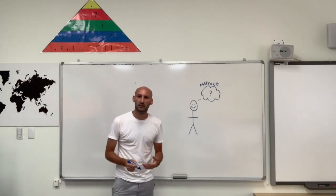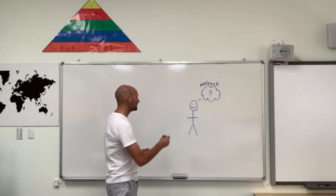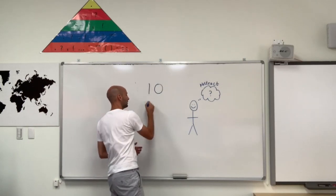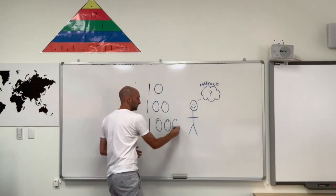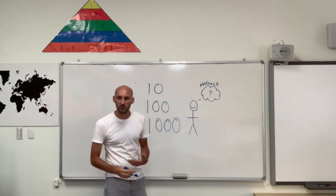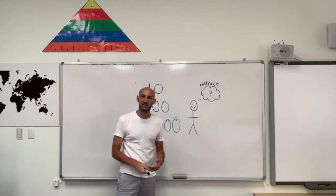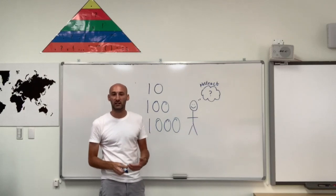Hi everybody, in this video today I'm going to be talking about counting in multiples of 10, 100 and 1000 in an abstract way, which means that we won't be using any concrete manipulatives or drawing any pictures to help us.